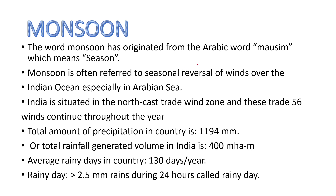The first topic is monsoon. The word monsoon has originated from the Arabic word 'moussin' which means season. Monsoon is often referred to as seasonal reversal of winds over the Indian Ocean, especially in the Arabian Sea. India is situated in the northeast trade wind zone and this trade wind continues throughout the year. Total amount of precipitation in the country is around 1194 mm and total rainfall generated volume in India is 400 million hectare meters. Average rainy days in the country is around 130 days per year.